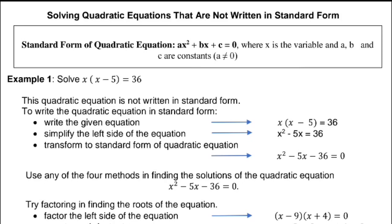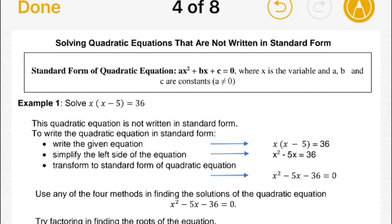Example 1: solve x times the quantity of x minus 5 equals 36. This quadratic equation is not written in standard form. Write it in standard form by distributing x to the terms inside the parentheses of x minus 5. So x times x is x squared, and x times negative 5 is negative 5x. It became x squared minus 5x equals 36. Then transpose 36 to the left side, so it becomes negative 36. So x squared minus 5x minus 36 equals 0.